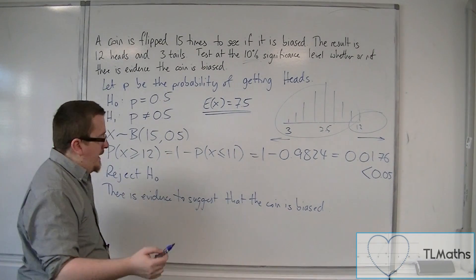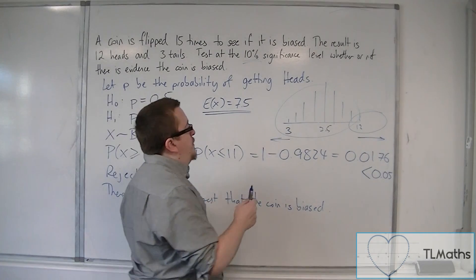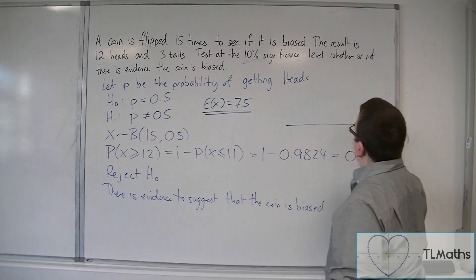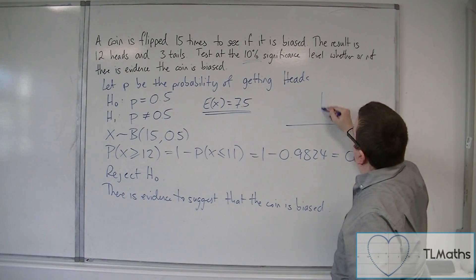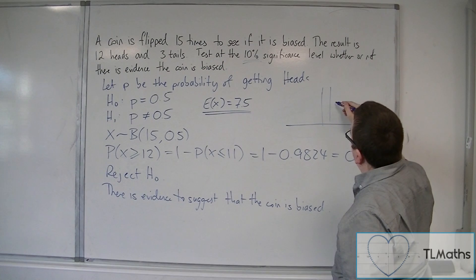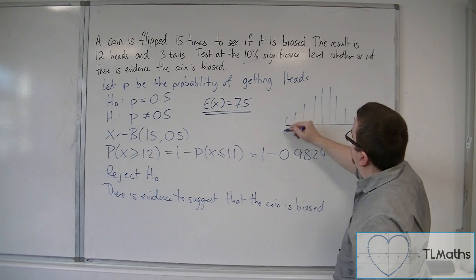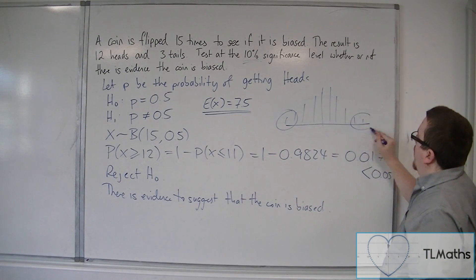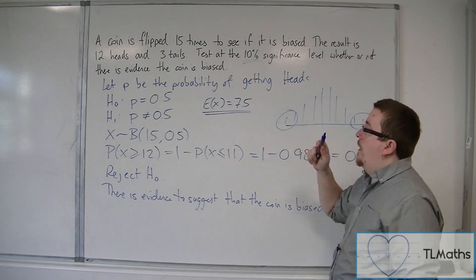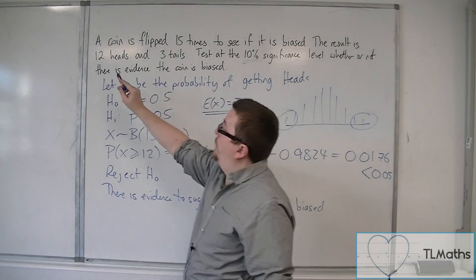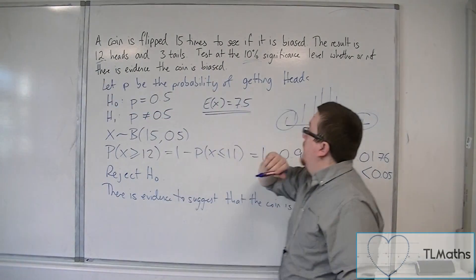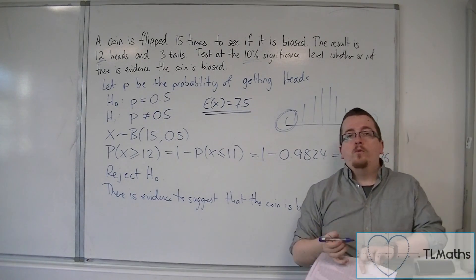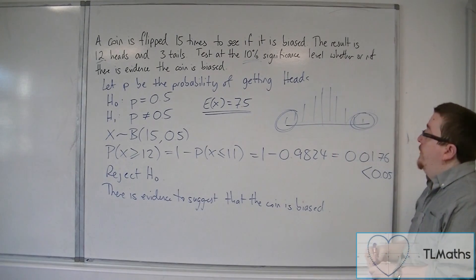So ultimately, what we're saying here is that we have this distribution. And what we're saying is that 5% from either end, if the value that we get, so in this case 12, is either within this region or within that region, we would say that we would have evidence to suggest the coin is biased.